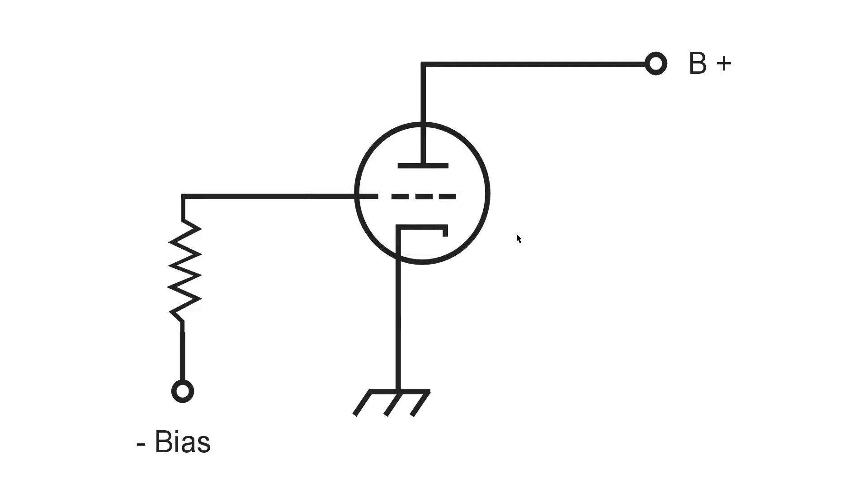This is the triode vacuum tube, the cathode shown here, the grid shown here, and the anode or plate shown here.